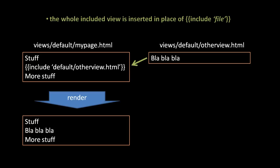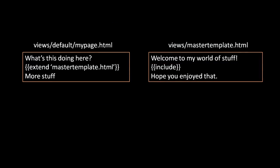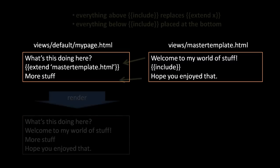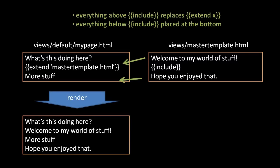The fileless include and extend directives work together as follows: in the view to be rendered, mypage.html, we use an extend directive specifying the path to mastertemplate.html. In the mastertemplate.html view, we place a single include directive with no file specified. When we render mypage.html, the content of mastertemplate.html above its include directive gets inserted where the extend directive was, and the content below the include directive gets appended to the end. To be clear, we're talking about modifying the rendered output, not the actual view files.